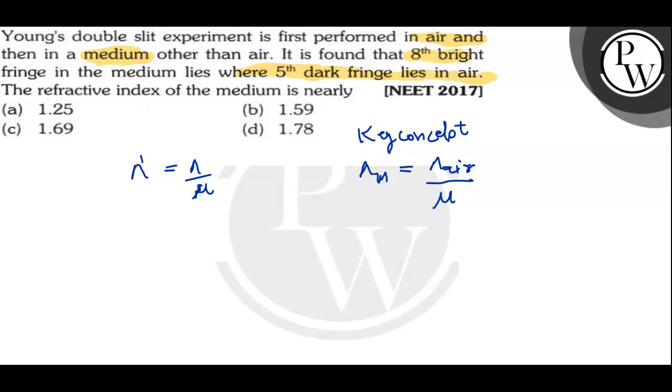For air, air के लिए beta हमें क्या दे रखिये? 5th dark fringe. Air के लिए हमारे पास YS की value क्या आ जाएगी? Refractive index में हम distance कैसे निकालेंगे? YS is equal to (2M minus 1) lambda D upon 2D. So, here M is what? M is 5.